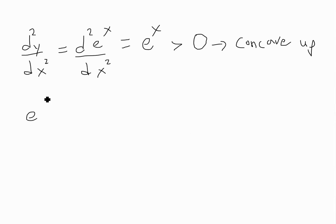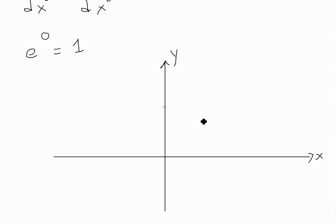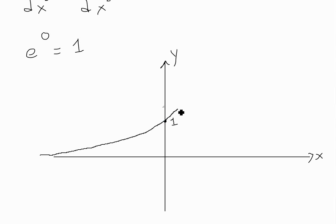We also know that when we plug in zero, e to the zero equals just one. So now we can put it all together and graph it out. Here's an x-y axis: we know that at x equals zero, y is one — that's the function value. At negative infinity you're approaching the x-axis, which is the horizontal asymptote at zero. Since it's always increasing and always concave up, it crosses the point (0, 1) and keeps going up exponentially higher and higher toward infinity.